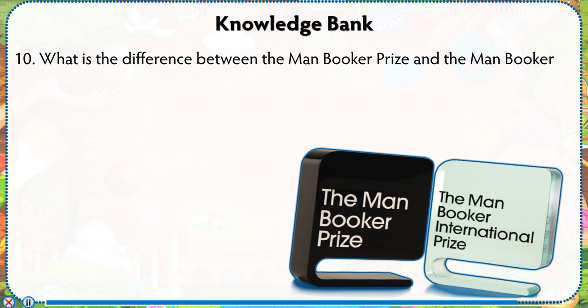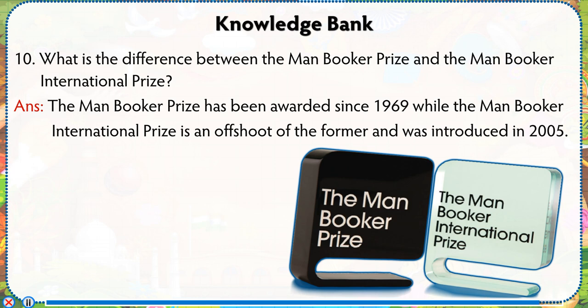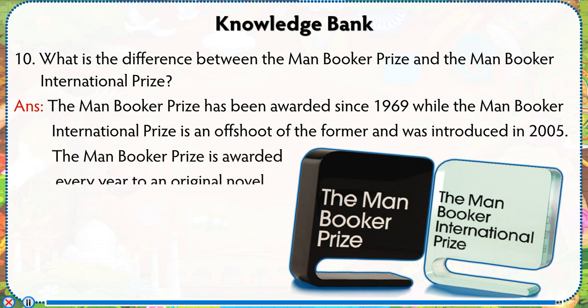What is the difference between the Man Booker Prize and the Man Booker International Prize? Answer: The Man Booker Prize has been awarded since 1969, while the Man Booker International Prize is an offshoot of the former and was introduced in 2005. The Man Booker Prize is awarded every year to an original novel written in English.